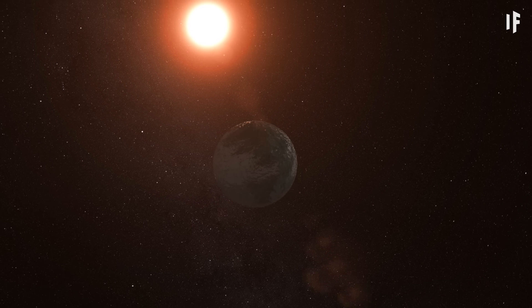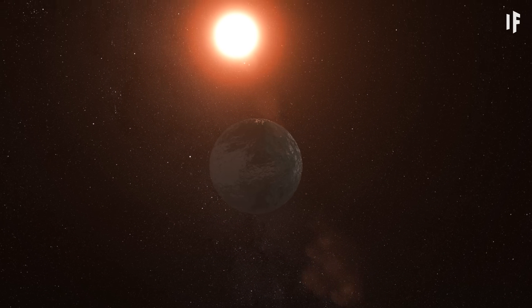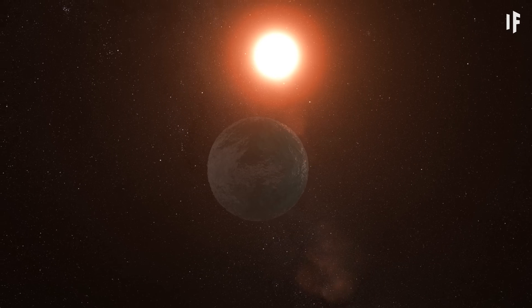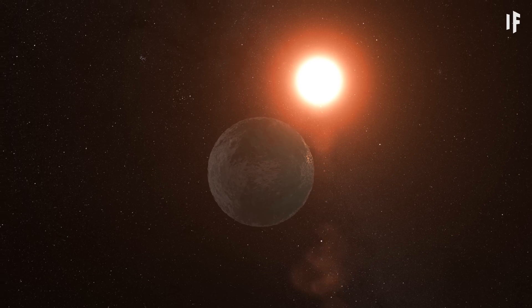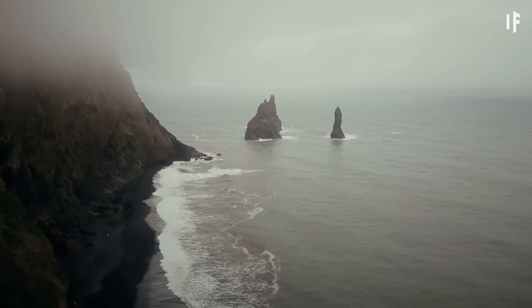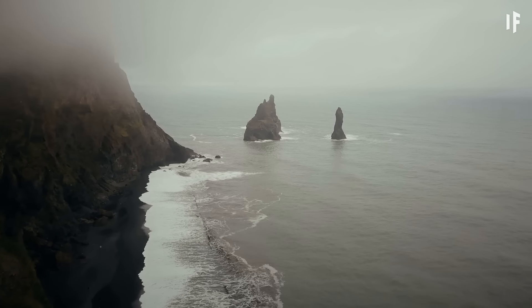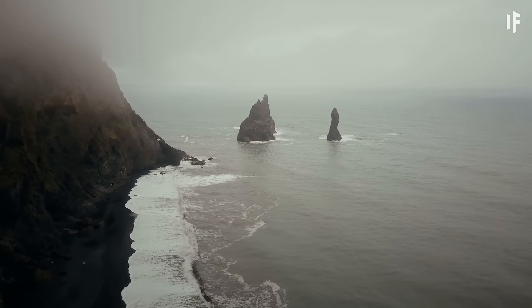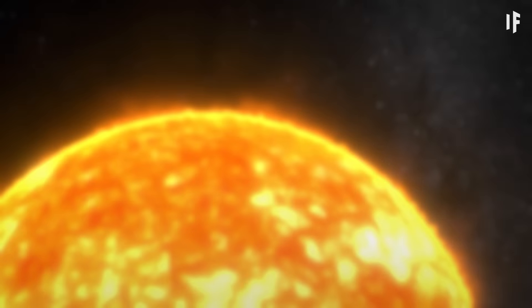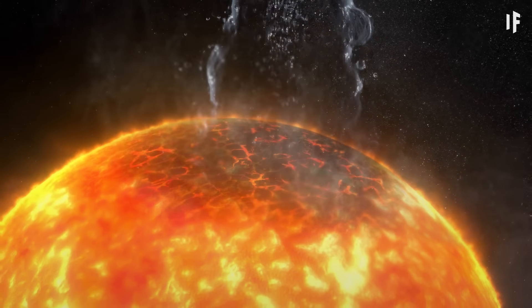This planet is 2.7 times bigger than the Earth in diameter and weighs 7 times more than our planet. It has much less rock and a lot more water than the Earth does. There would probably be enough water on the water world to put out the Sun forever.